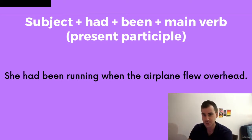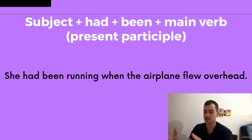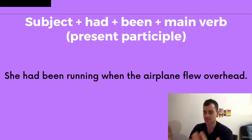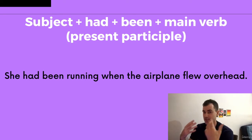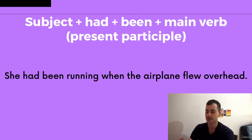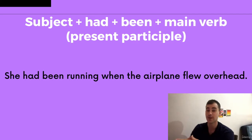The structure of this is: subject — she — had been — plus the main verb in the present participle, which means adding -ing — running. She had been running when the airplane flew overhead.